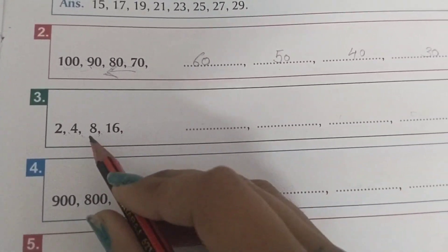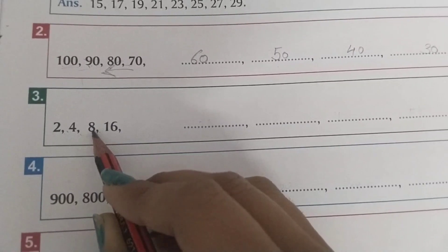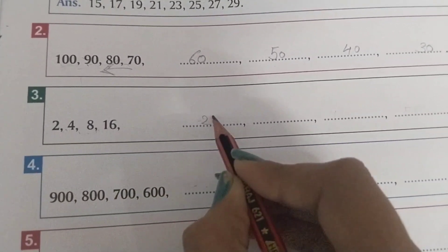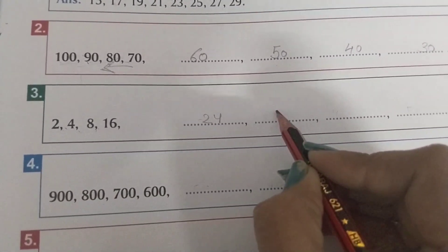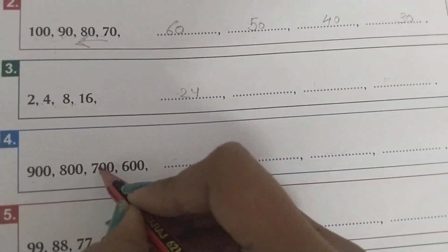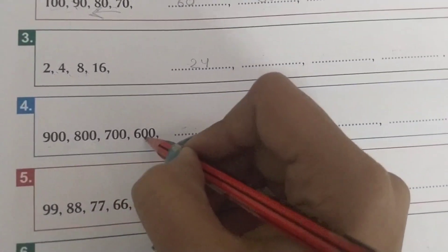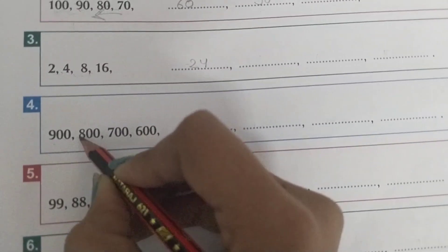900, 800, 700, 600. Like this, this is also in a decreasing order. 500, 400, and so on.